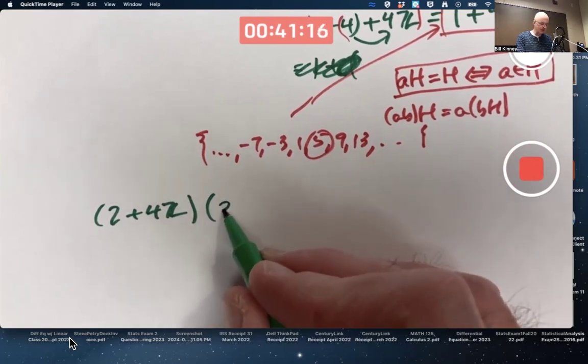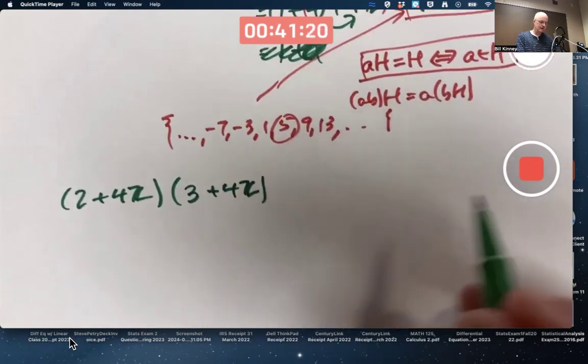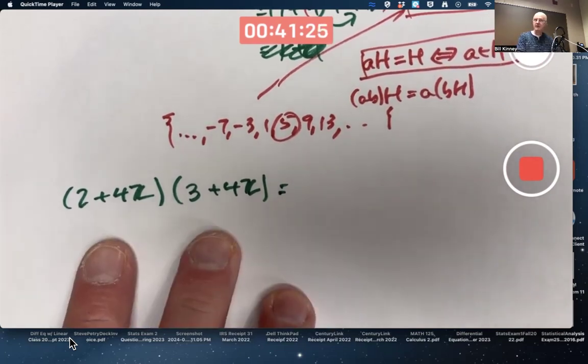So we're taking 2 plus 4Z and multiplying by 3 plus 4Z. According to that theorem above the example again, you multiply cosets by multiplying their representatives.